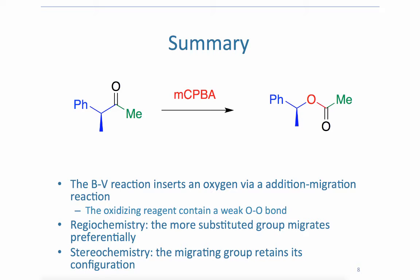On slide 8 we can summarize the full reaction. The Baeyer-Villiger reaction inserts an oxygen which comes from an oxidant. The oxygen is added via addition of the oxidant and then migration of a migrating group.